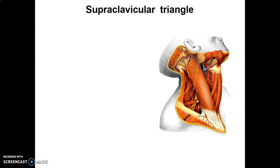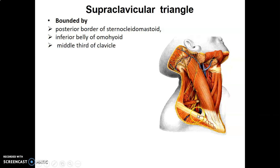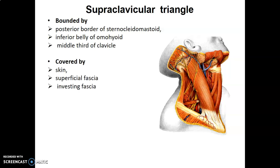The supraclavicular triangle, the lower triangle, is bounded anteriorly by the posterior border of the sternocleidomastoid, superiorly by the inferior belly of the omohyoid, and inferiorly by the middle third of the clavicle. It is covered by skin, superficial fascia, and investing fascia forming the roof, and its floor is formed by prevertebral fascia covering the inferior parts of the scalenus muscles.